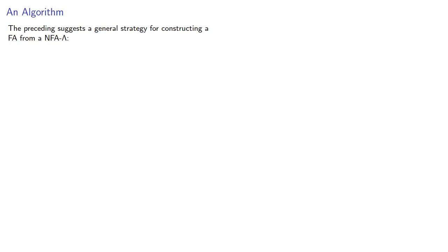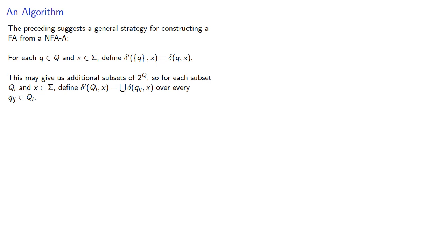The proceedings suggest a general strategy for constructing a finite automaton from an NFA-lambda. For each state and each symbol, define the transition function from the singleton to be the same thing that our NFA-lambda would produce. This may give us some additional subsets of our power set, so for every subset and symbol we define our transition function to give us the union of every possible location we could arrive at. Since the number of subsets is finite, we'll eventually exhaust the possible states.